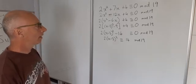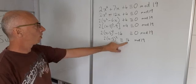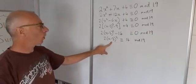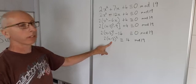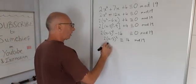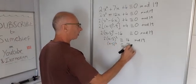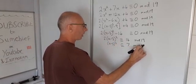Now we can divide everything by 2 and then we can get this (x - 3)² on its own and take the square root. That's the target, that's what we're aiming for. So now we end up with (x - 3)² ≡ 7 mod 19.